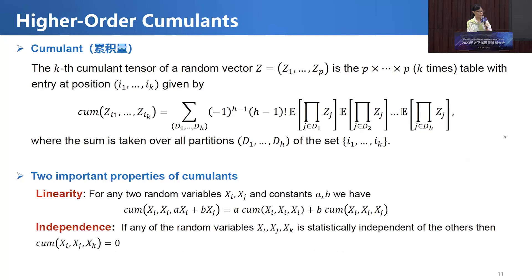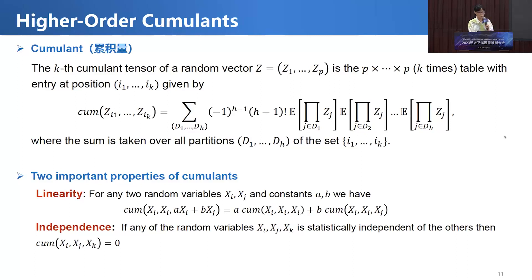So we try to find other techniques to capture more information from data. Before I introduce the method, let me introduce high-order cumulants. The cumulants of a random vector Z can be defined as follows. They have two important properties: linearity and independence. If any of the random variables is statistically independent, then the joint cumulant is zero. So we can use these two important properties to do causal discovery.